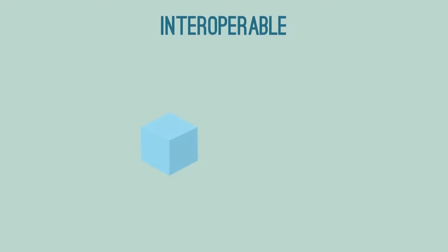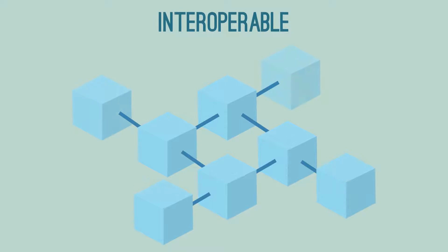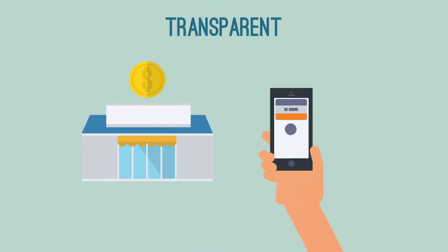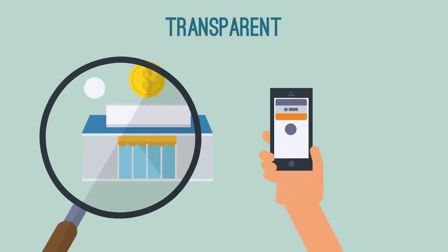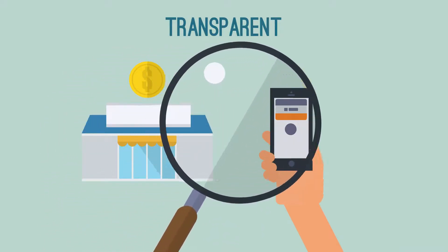Interoperable: a critical building block that enables simple blockchain interaction, creating a scalable ecosystem that can become more sophisticated over time. Transparent: all market and transaction activities are visible to all participants without violating privacy.